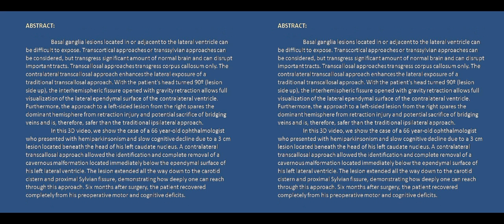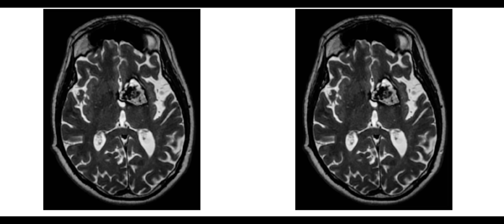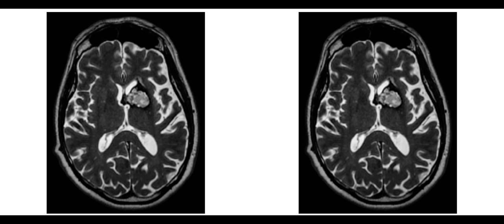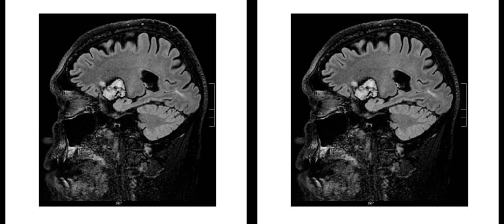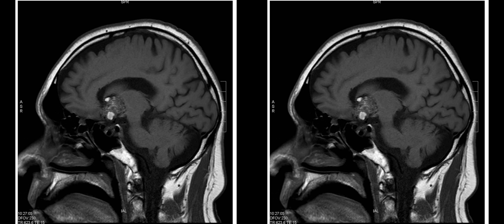In this video, we'll present the contralateral transcollosal approach to a basal ganglia cavernous malformation. As you can see in these MRI images, it extends all the way from the basal ganglia down to the carotid cistern and sylvian fissure.